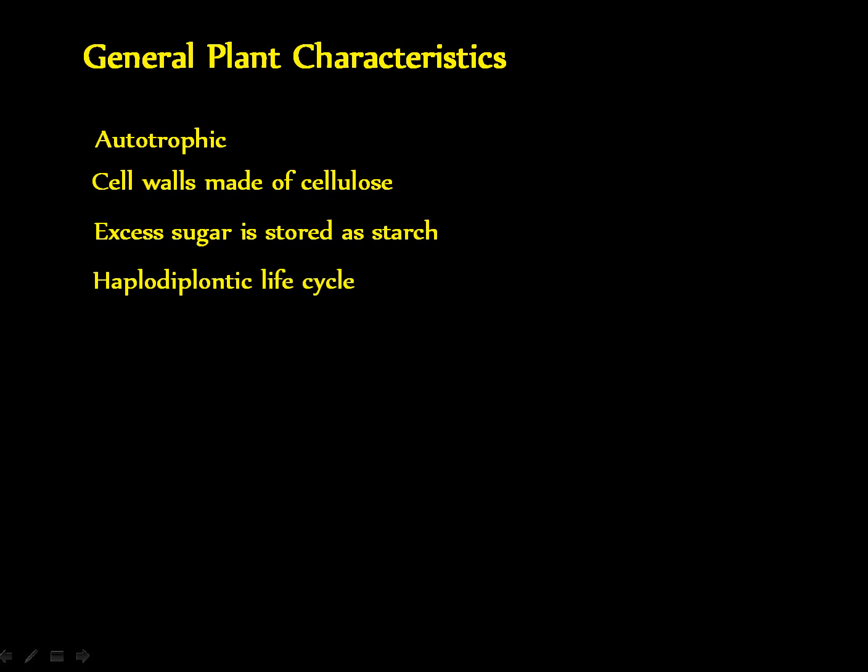Excess sugar made in the plant is stored as starch. Plants also have a haplodiplontic life cycle, which means the plant has a haploid stage called the gametophyte and a diploid stage called the sporophyte — both of these stages are multicellular. Alternation of generations simply means one generation gives rise to the next: the gametophyte stage makes the sporophyte, and the sporophyte eventually makes another gametophyte.